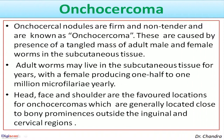Adult worms usually do not cause ocular cysts, unlike infection with Loa loa and Dirofilaria, which move around in the conjunctiva. Onchocercoma nodules are firm and non-tender. These are caused by the presence of a tangled mass of adult male and female worms in the subcutaneous tissue. Adult worms may live in the subcutaneous tissue for years, with a female producing 1.5 to 1 million microfilariae yearly. The head, face, and shoulder are favoured locations, generally close to bony prominences, outside the inguinal and cervical regions.